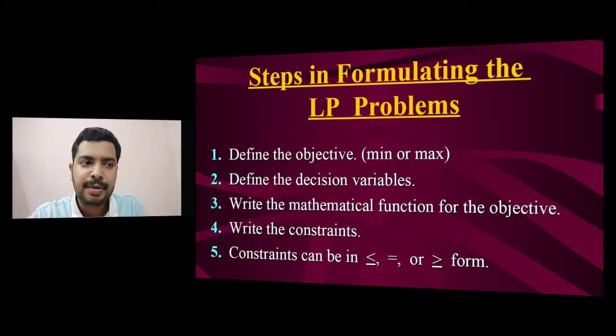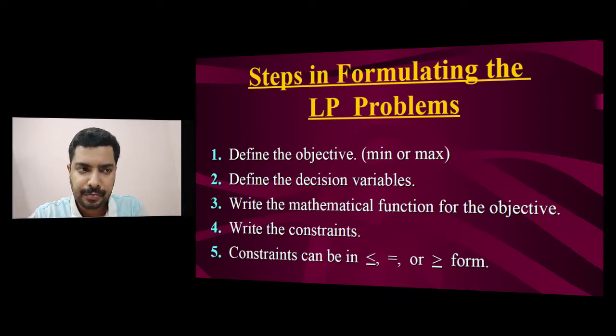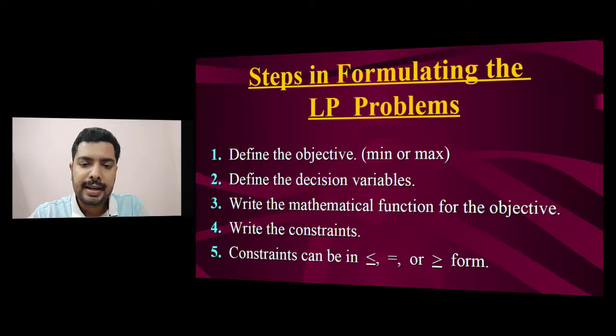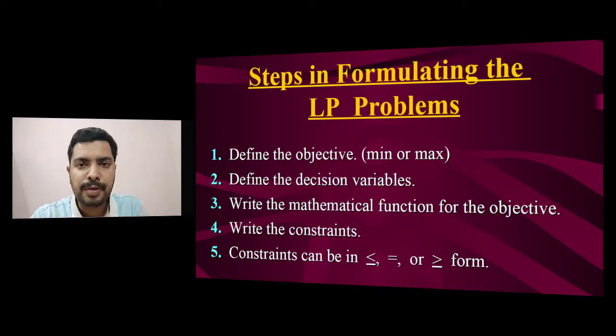The third step is to write the mathematical function for the objective. Then you have to identify the constraints, write them down, tabulate them, and put them into a proper order. These are the different steps in the formulation of a linear programming problem.